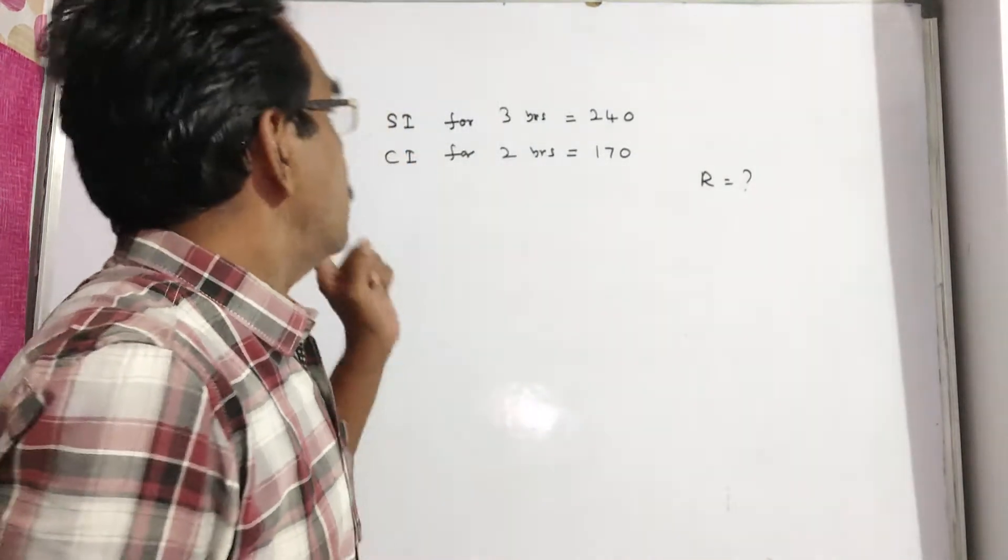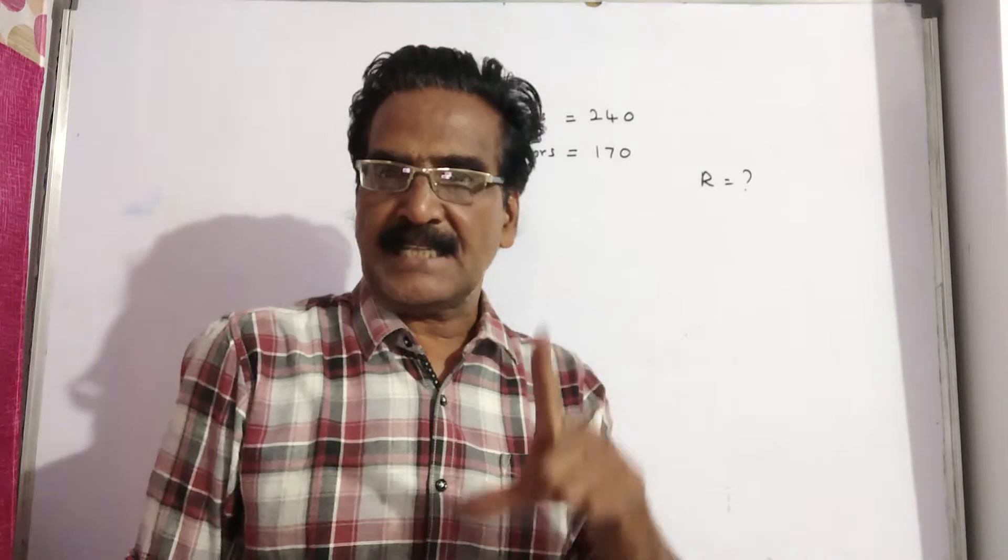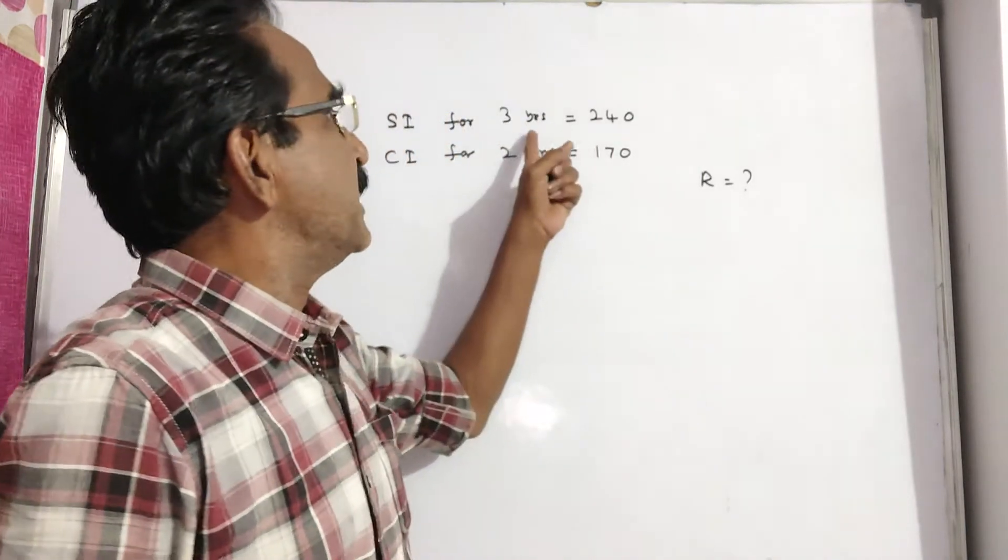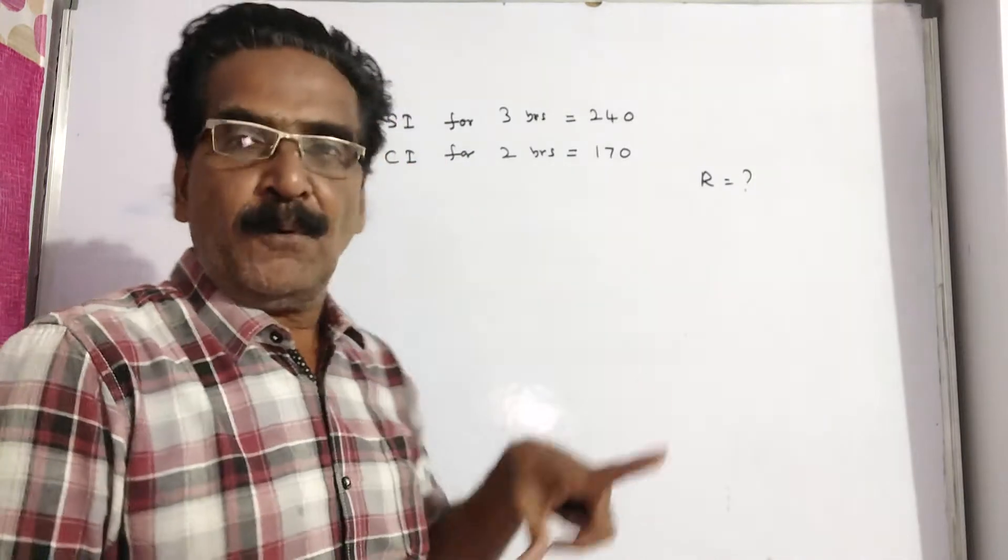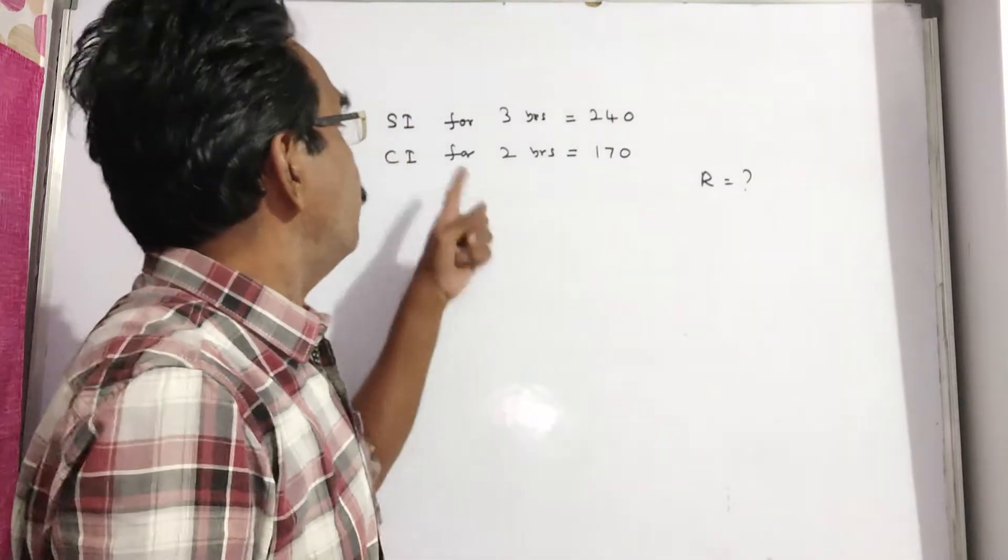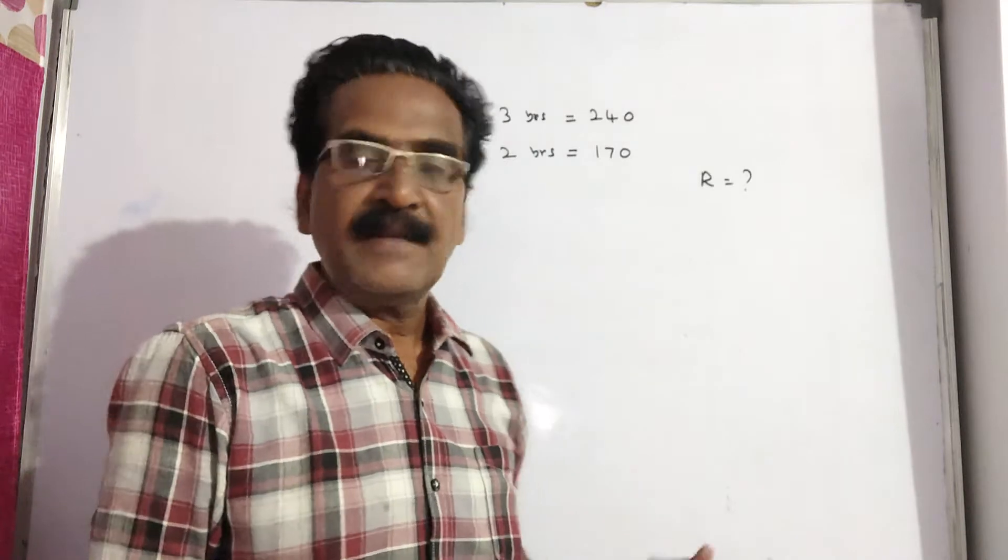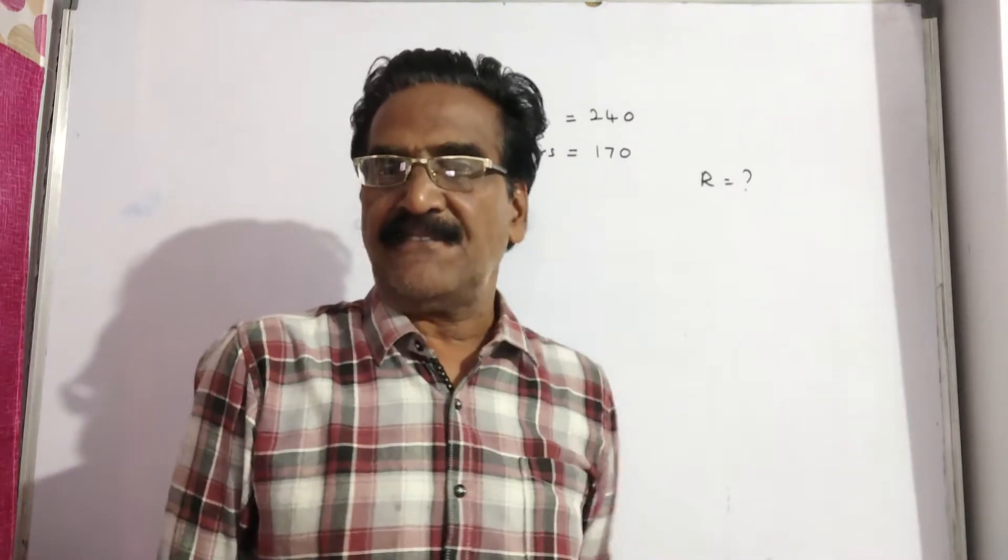Friends, the problem is given in the description box. See the problem. The simple interest on a certain sum for 3 years is Rs. 240 and compound interest on the same sum for 2 years is Rs. 170. Then what is the rate of interest?